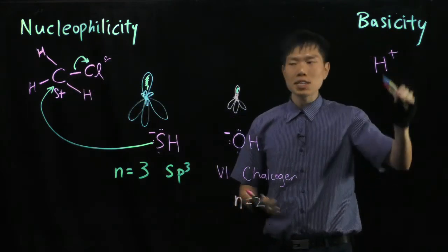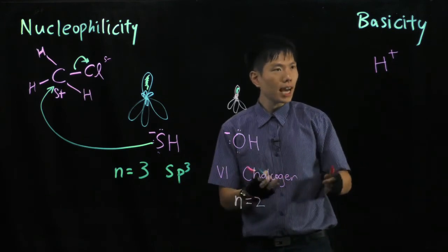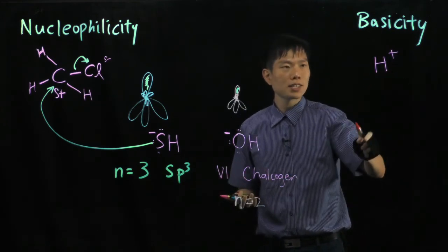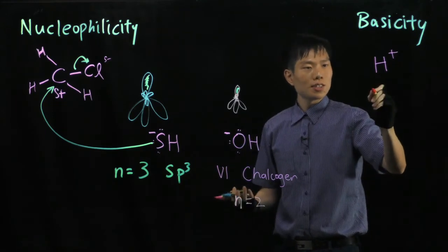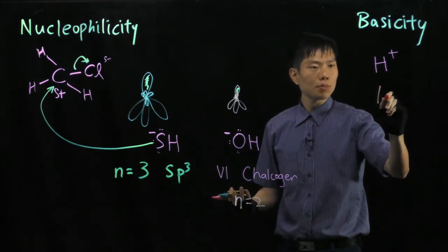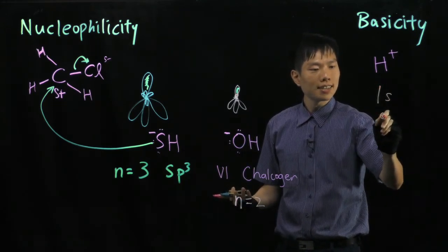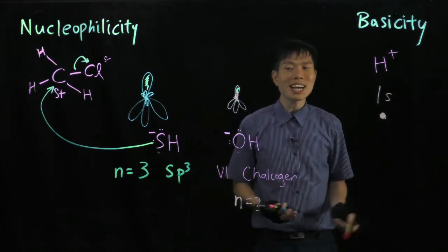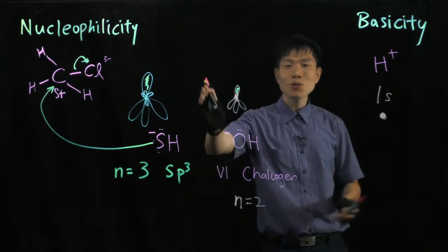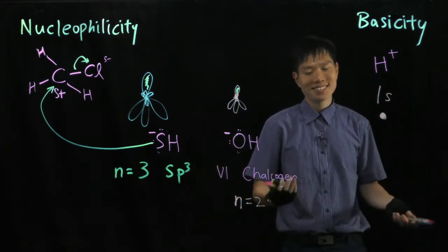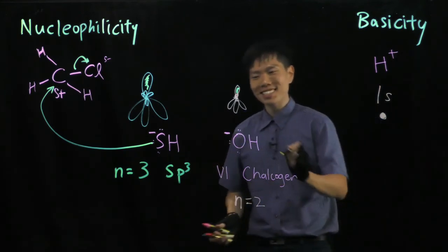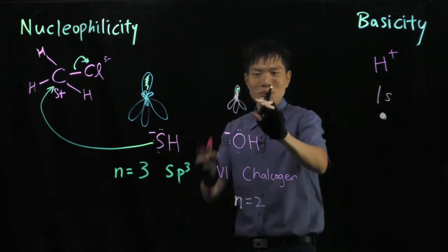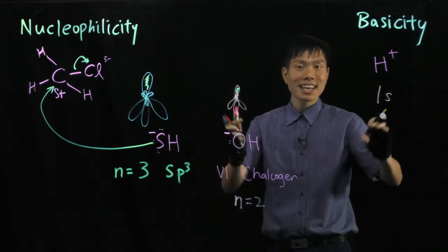Now, to compare the basicity of these two ions, we need to see how easy it is for each to overlap with the orbital of H⁺. H is in period 1, so it only has a 1s orbital that's really tiny — like a small sphere. Which of these orbitals could overlap better with 1s? It's the hydroxide, because of the similar size and energy.